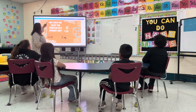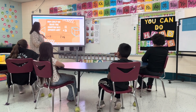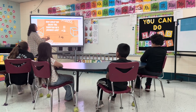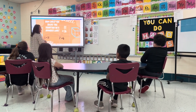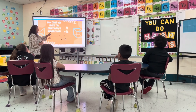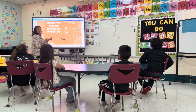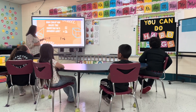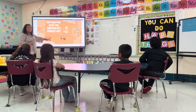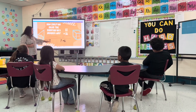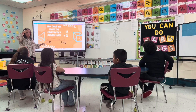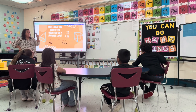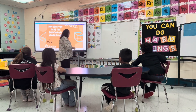Another way we could look at this would be on a number line — an open number line. We could take our first number, 22, and add 30 because that's the whole tens number here. So 22 plus 30, adding by 10's: 22, 32, 42, 52. Let's draw our own over here.